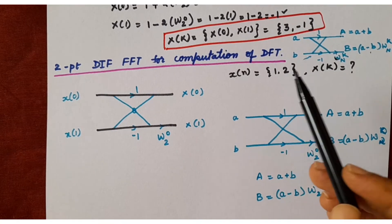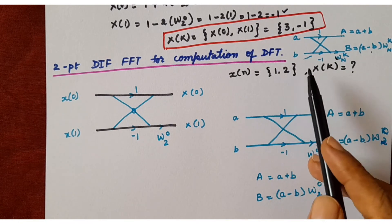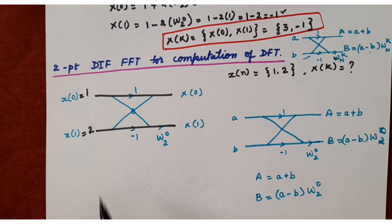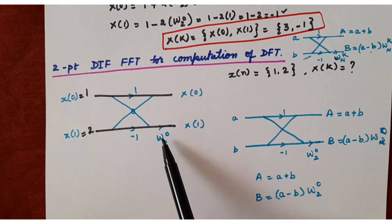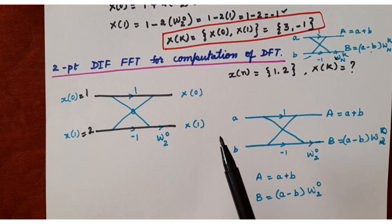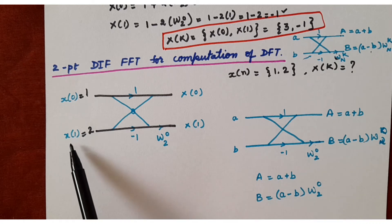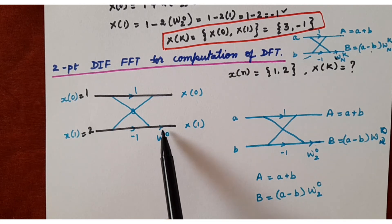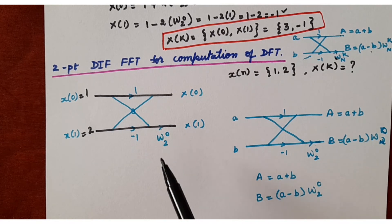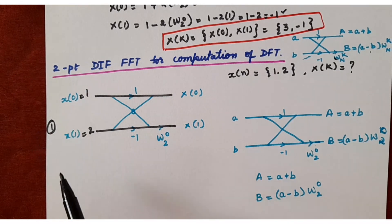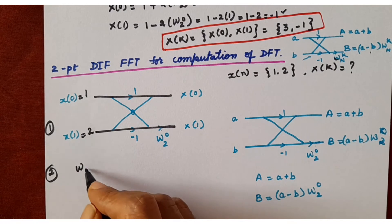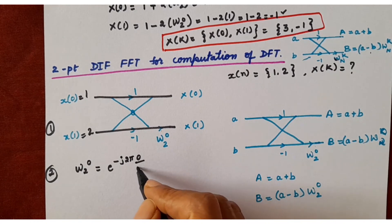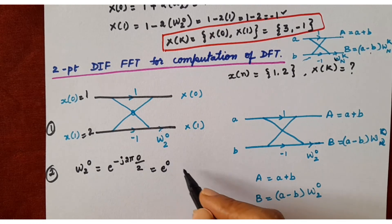The given sequence is the same as before: x[n] = {1, 2}. We substitute X[0] = 1 and X[1] = 2. In the DIF butterfly diagram, the twiddle factor W_2^0 is placed at the end of the second line. Input variables are taken as small x and output variables as capital X. The twiddle factor W_2^0 = e^(−j2πK/N) with K = 0 and N = 2 gives e^0 = 1.